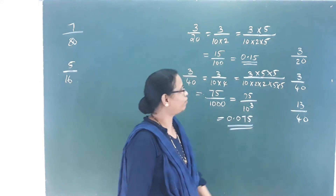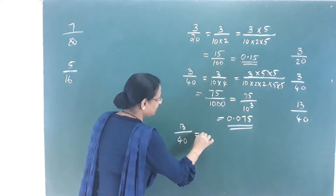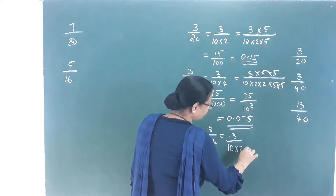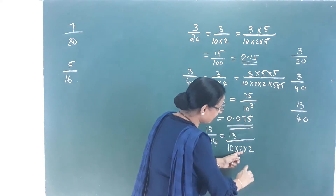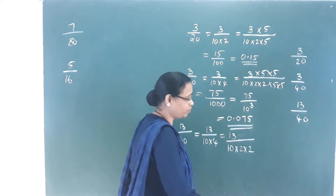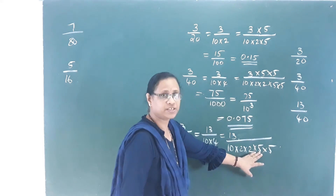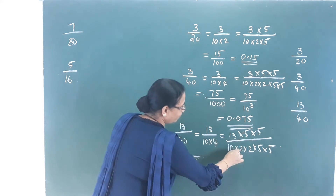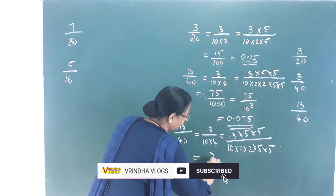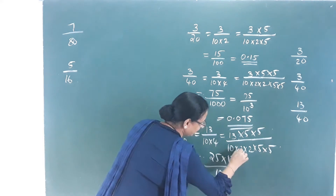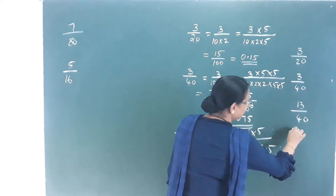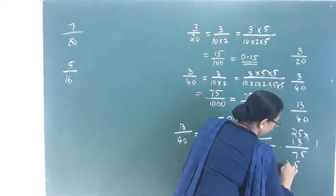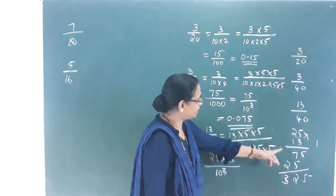Next question: 13 by 40. Then 13 by 40 — I write 10 into 4. So 13 by 10 into 2 into 2. Multiply by 5: we get 10 into 5, multiply by 2 into 5. Change the value — 5 into 5. Three 10s here, giving 10 cubed. Now 25 into 13 gives 325.